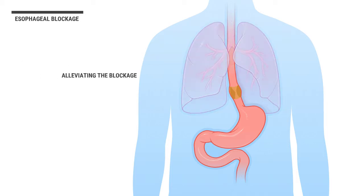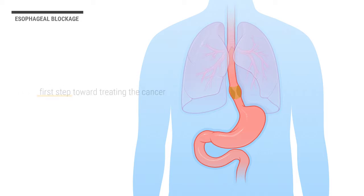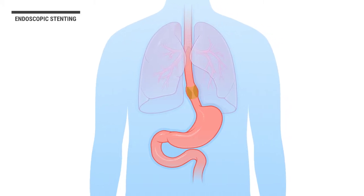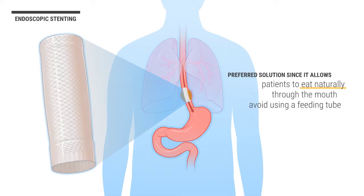Alleviating the blockage and improving nutrition for the patient is the first step towards treating the cancer. An endoscopic stenting — a procedure to place a flexible tube that opens the blockage — is a preferred solution since it allows patients to eat naturally through the mouth and avoid using a feeding tube in the stomach or the small intestine.